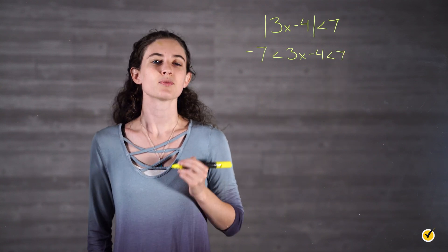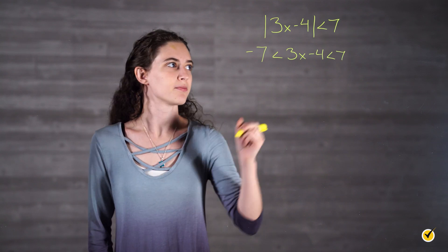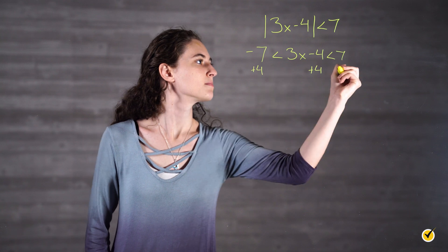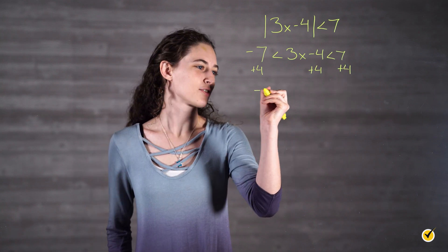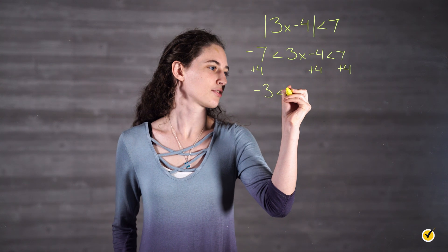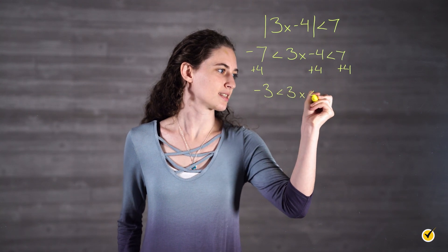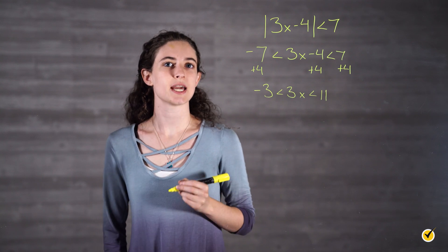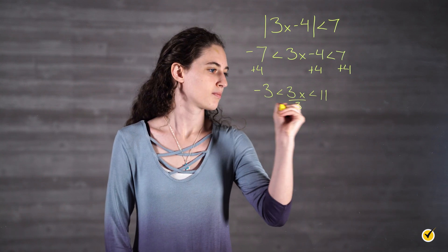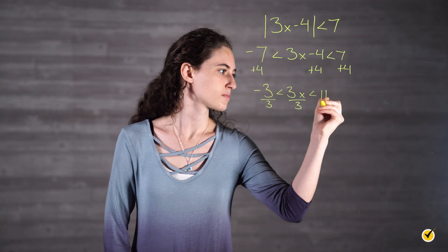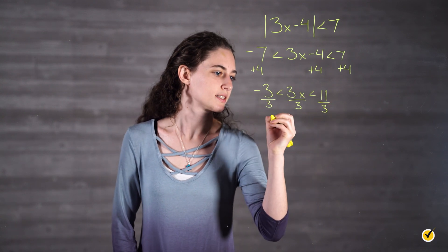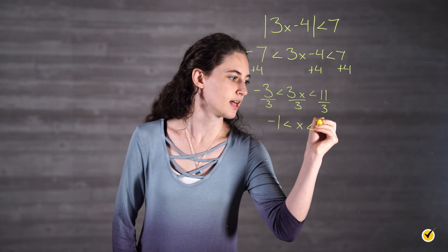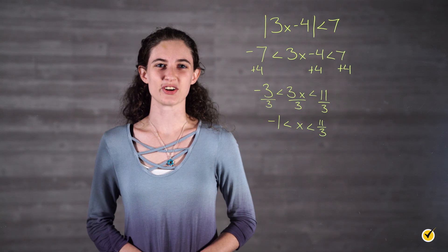Then we solve for x. First, we add 4 to each part. This gives us negative 3 is less than 3x is less than 11. Now divide by 3 to get x by itself. This gives us negative 1 is less than x is less than 11 thirds.